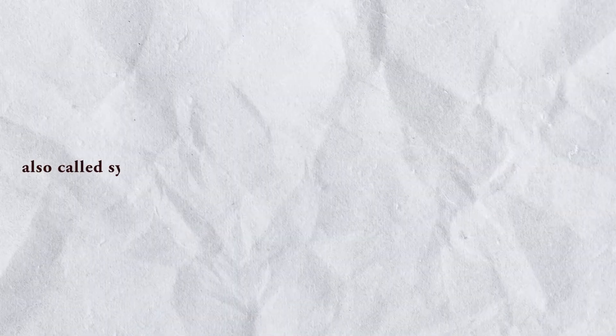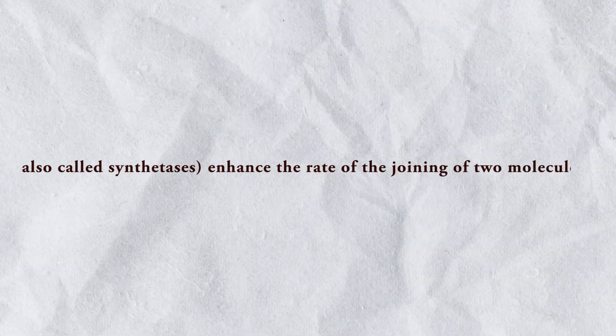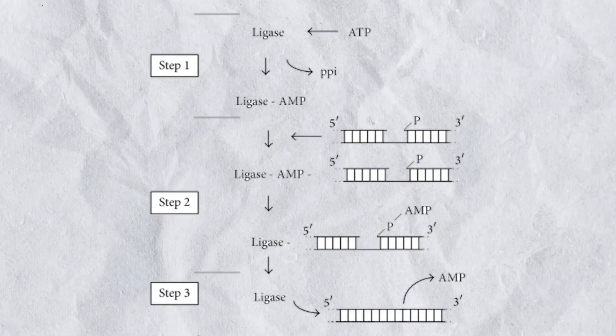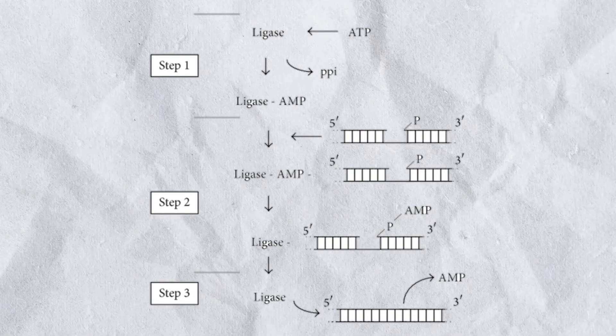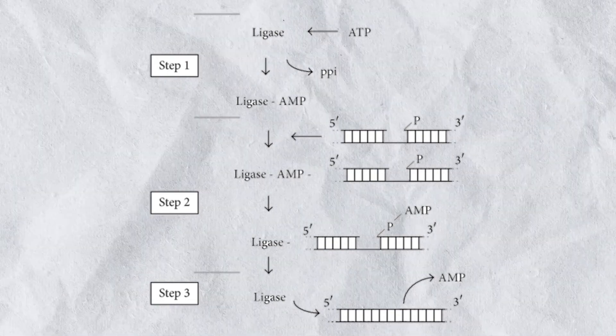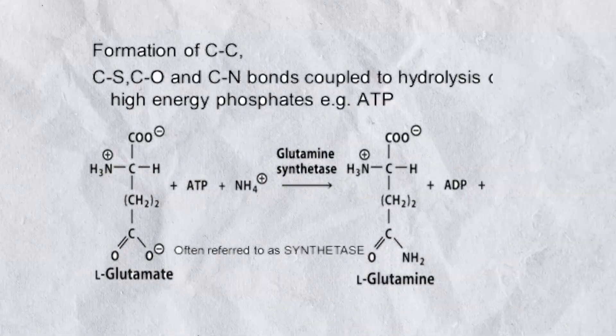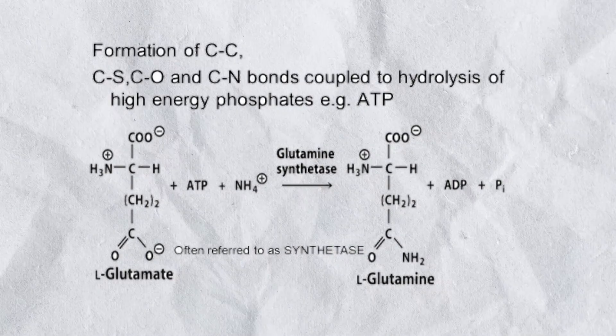Type number six: Ligases, also called synthetases. Enhance the rate of joining of two molecules. They usually accomplish this by making use of energy derived from the breakdown of adenosine triphosphate, ATP. Examples of ligases include acetyl-CoA synthetase.